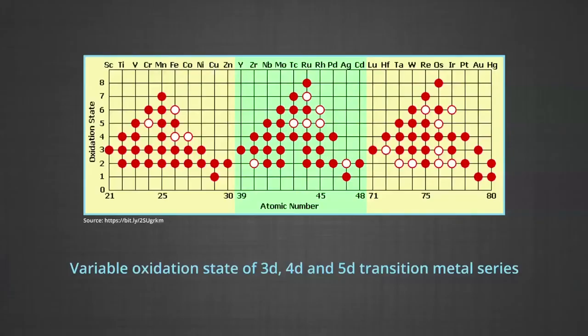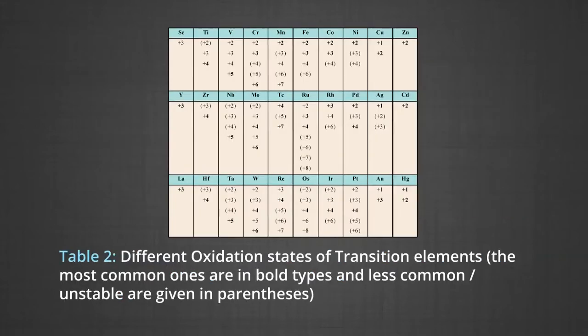Now, the oxidation states. One of the notable features of a transition element is the great variety of oxidation states it may show in its compounds. The figure shows the variable oxidation states of the 3D, 4D, and 5D transition metal series. The table on screen lists the common oxidation states of the first, second, and third row transition elements.